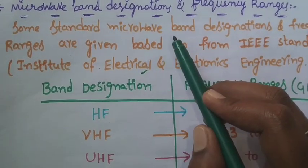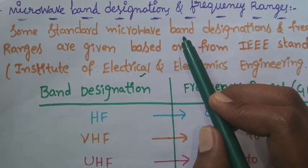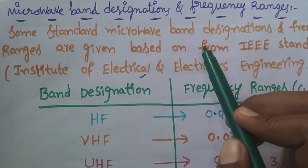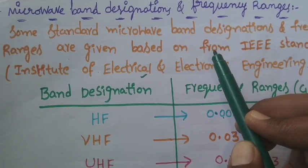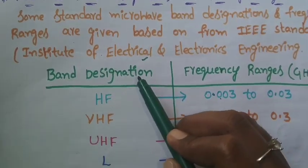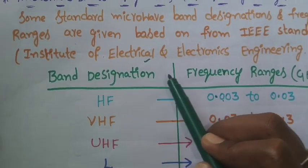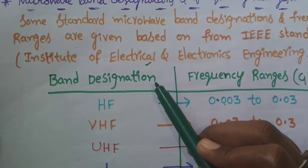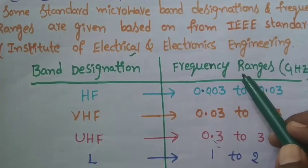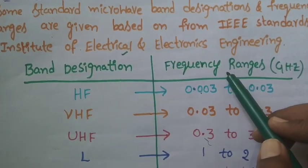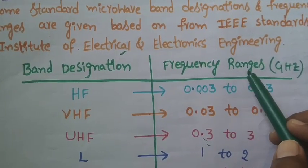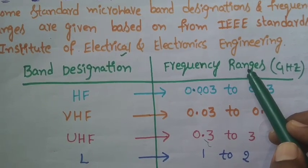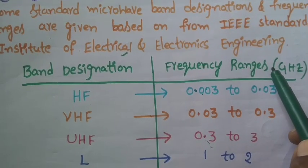Microwave band designations and their frequency ranges are also given based upon IEEE standards. We will see some band designations of microwave and their frequency ranges. Keep in mind that the microwave frequency is always in gigahertz.